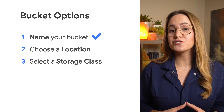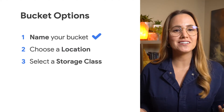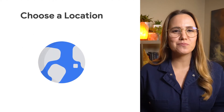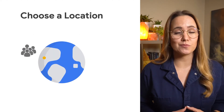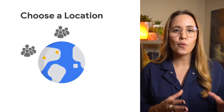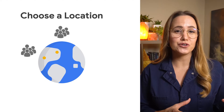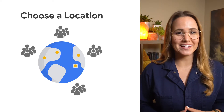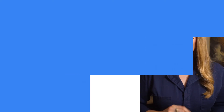Once you've named your bucket, you need to select a location. You should choose a location based upon what type of redundancy options you need, where your primary users are, and what your expected first time to byte is when caching is turned off. Generally, you should store your data in a location that's convenient or contains the majority of the users of your data.